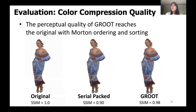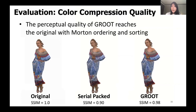Here we show how GROOT maintains perceptual quality even with higher compression rate using Morton ordering and color sorting. The left image shows the rendered original point cloud of the long dress dataset. The middle image shows results when applying JPEG compression after serial packing — the colors of the hand and shoulders were not preserved and mixed with the blue color of the dress. The far right image shows GROOT's result with Morton ordered packing and sorting, where color details are well preserved with near-identical perceptual quality to the original.